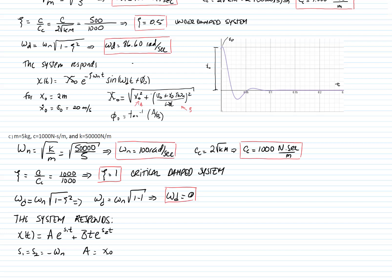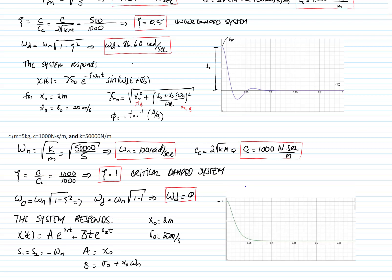For the conditions of initial displacement 2 meters and initial velocity 20 meters per second, we have the following response. This is the initial displacement, this is the initial velocity. And as you see, it goes very quickly to the equilibrium position. The critically damped system is the one that gives the fastest way to return to the equilibrium position without oscillation. So it will not rebound, it will not oscillate around, it will just go straight to zero.